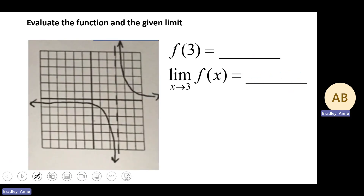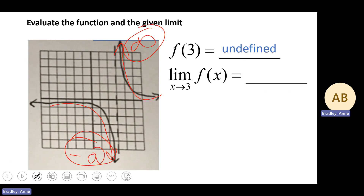Looking at the next problem: when we go to x equals 3, we again see a vertical asymptote. Hopefully you know that functions will never cross a vertical asymptote, so there will be no output value — resulting in undefined. When we evaluate the limit as x approaches 3 from the left, it's headed to negative infinity. And as it approaches 3 from the right, it's headed to positive infinity. These outputs are not the same numerical value, so the limit does not exist.